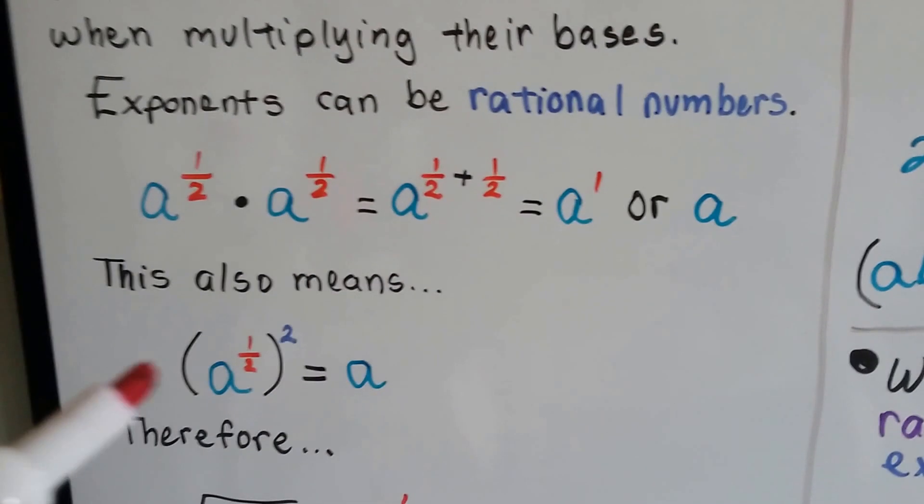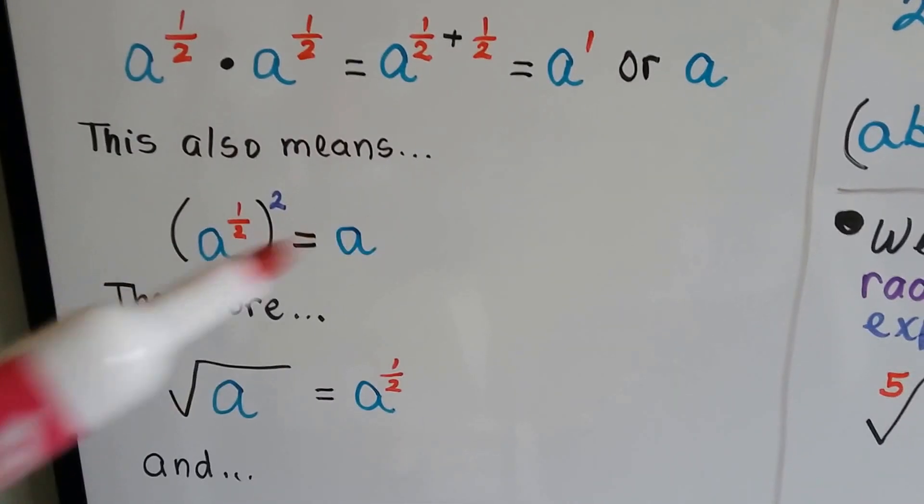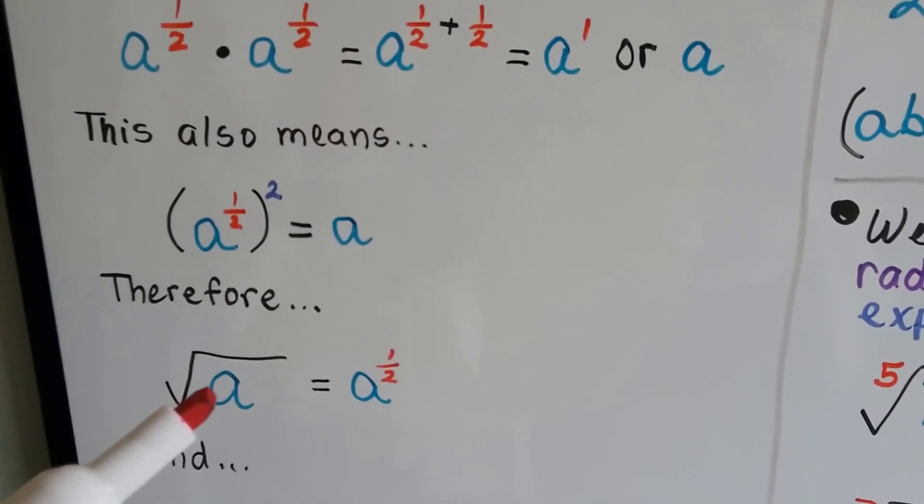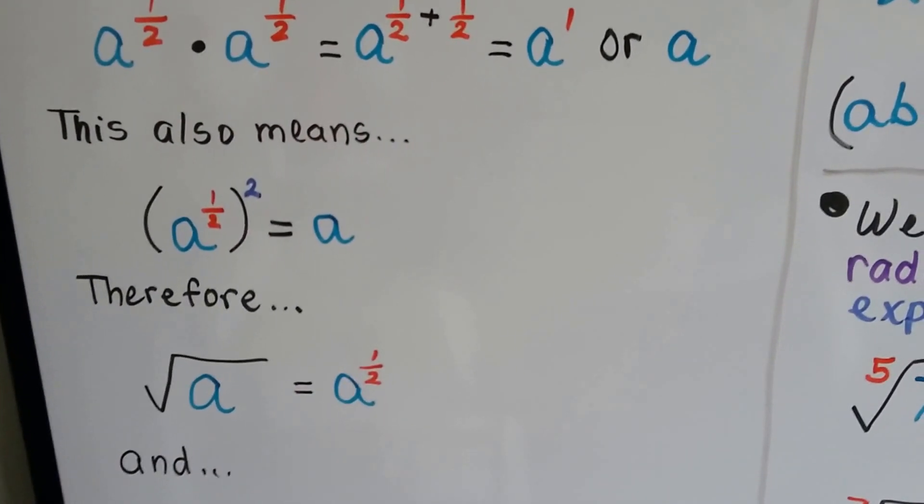It also means if we square this, that it's going to be an a. And if we square it and it's an a, that means the square root of a would equal a to the half power.